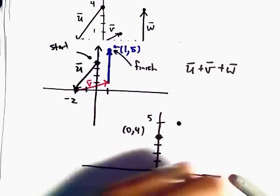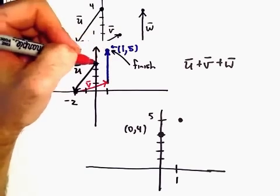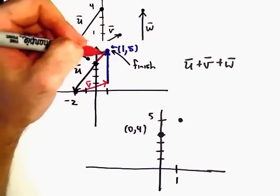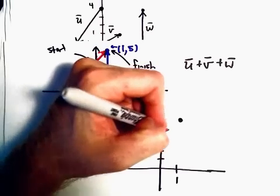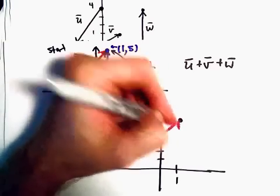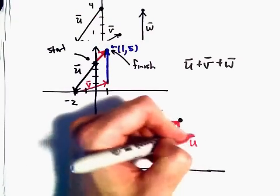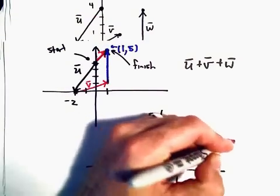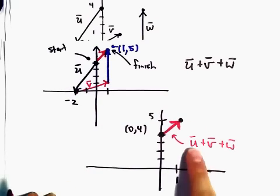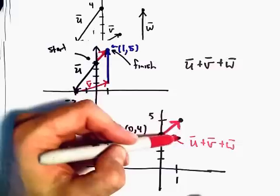So our solution, again, if we look at where we started versus where we stopped, if we connect those, that's going to be this vector right here. And that is going to be our vector u plus v plus w. Okay, so the vector u plus v plus w would basically just be a little vector that goes one unit to the right and one unit upwards.